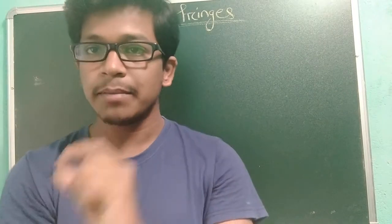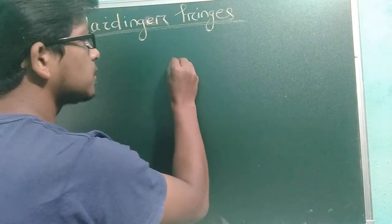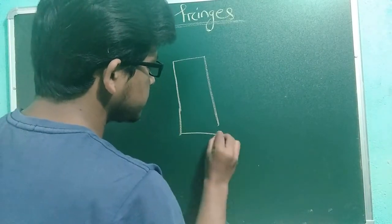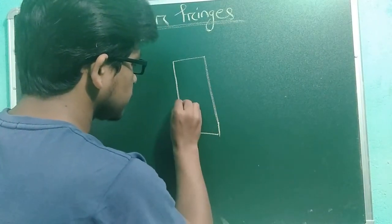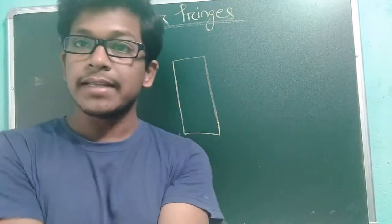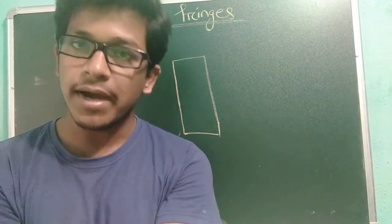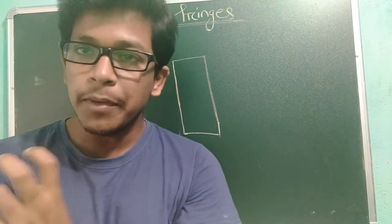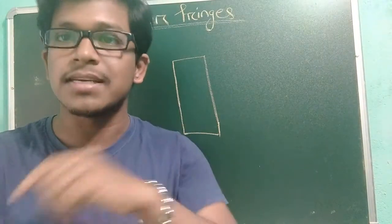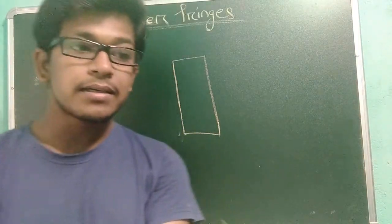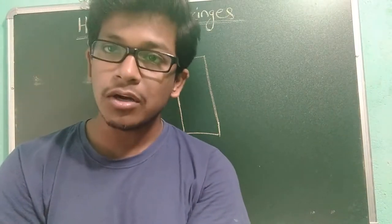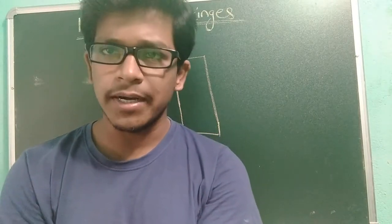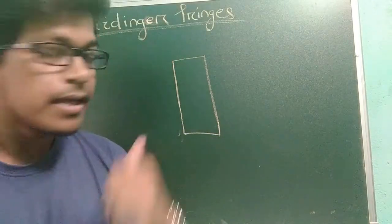Suppose you have a thick parallel film - what will happen? I will show you diagrammatically so that it will be easy for you to understand. In the thin parallel film and in the Wedge-shaped film we had a very thin film, so we are getting beautiful brilliant fringes and it's easy to get also. But according to theory it's very difficult to get in case of thick film.